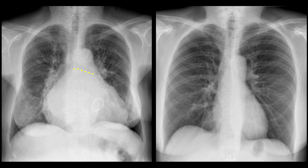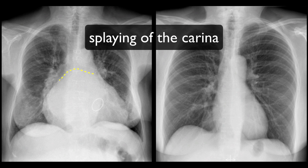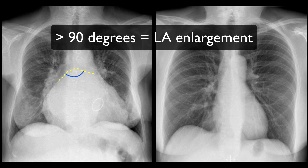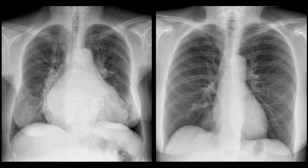The main bronchi themselves can also be used to assess left atrial enlargement. As the left atrium dilates, it causes splaying or widening of the carina. An angle of greater than 90 degrees is considered a sign of left atrial enlargement. As you can see in our normal patient, the carinal angle is nowhere near 90 degrees.